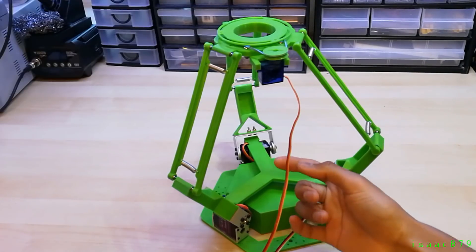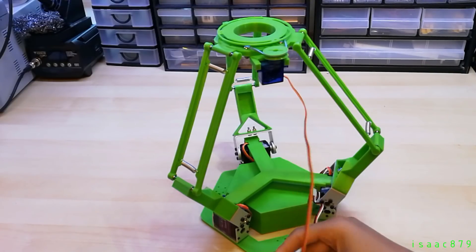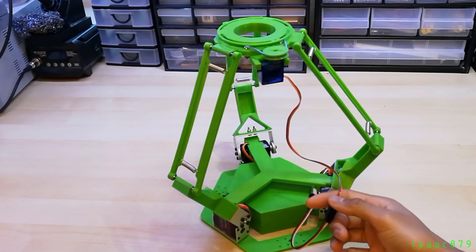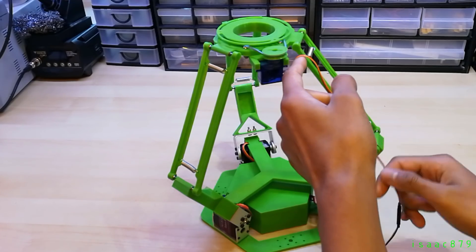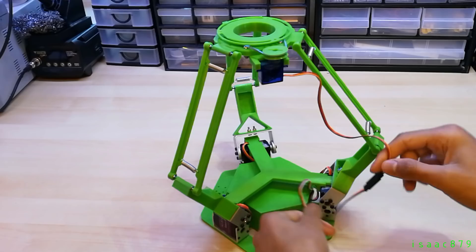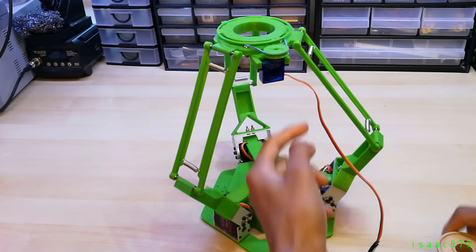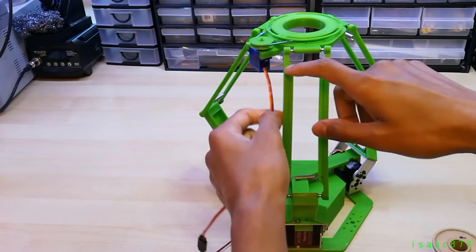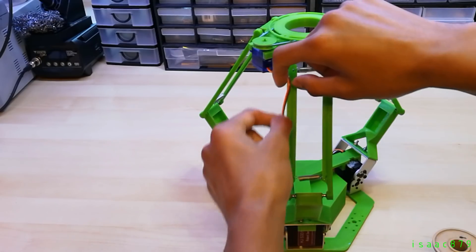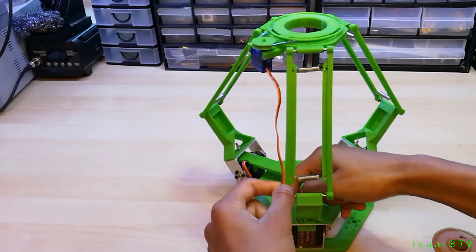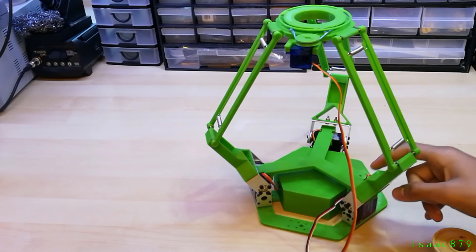I don't like the end effector servo's wire just being loose as it could catch on something and cause some issues. So I'm going to run it down the side of one of the arms of the robot to keep it out of the way. I'm going to use a bit of wire threaded through the holes of the springs in Link 2 to hold the servo wire in place.